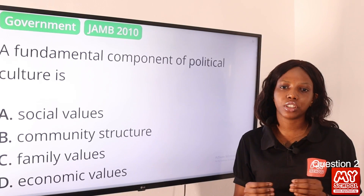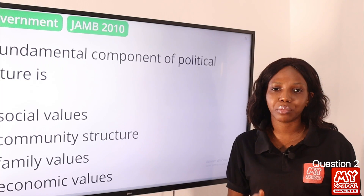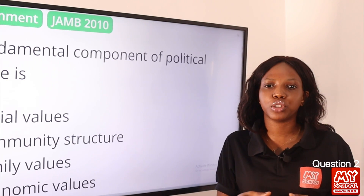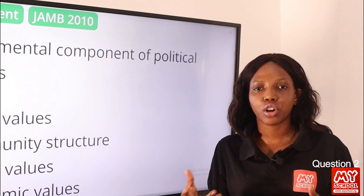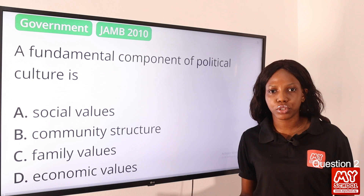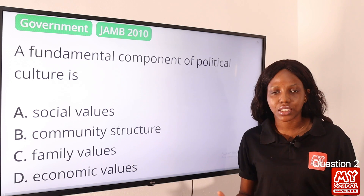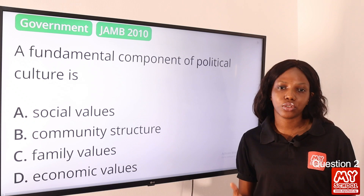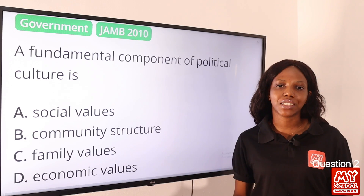Social values are a set of principles or moral principles that are generally accepted by the society. Political culture is the beliefs, attitudes, and values of a political system shared amongst members of a political community — or simply, how people behave during political activities such as voting. All of this starts with the society we find ourselves in. Social value is the fundamental component of political culture, so option A is the final answer.